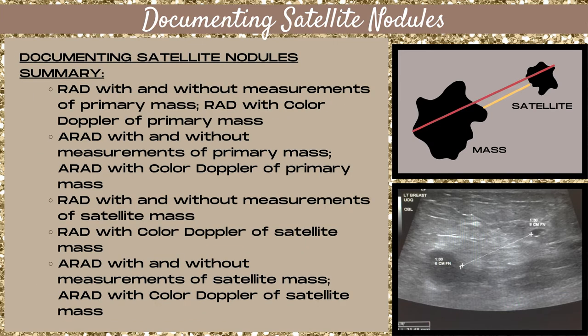Here are the steps for documenting satellite nodules on a breast ultrasound. You want to take a radial image with and without measurements of your primary mass, and a radial color Doppler image of your primary mass. You also want to take an antiradial image of your primary mass with and without measurements, and an antiradial color Doppler image of your primary mass.